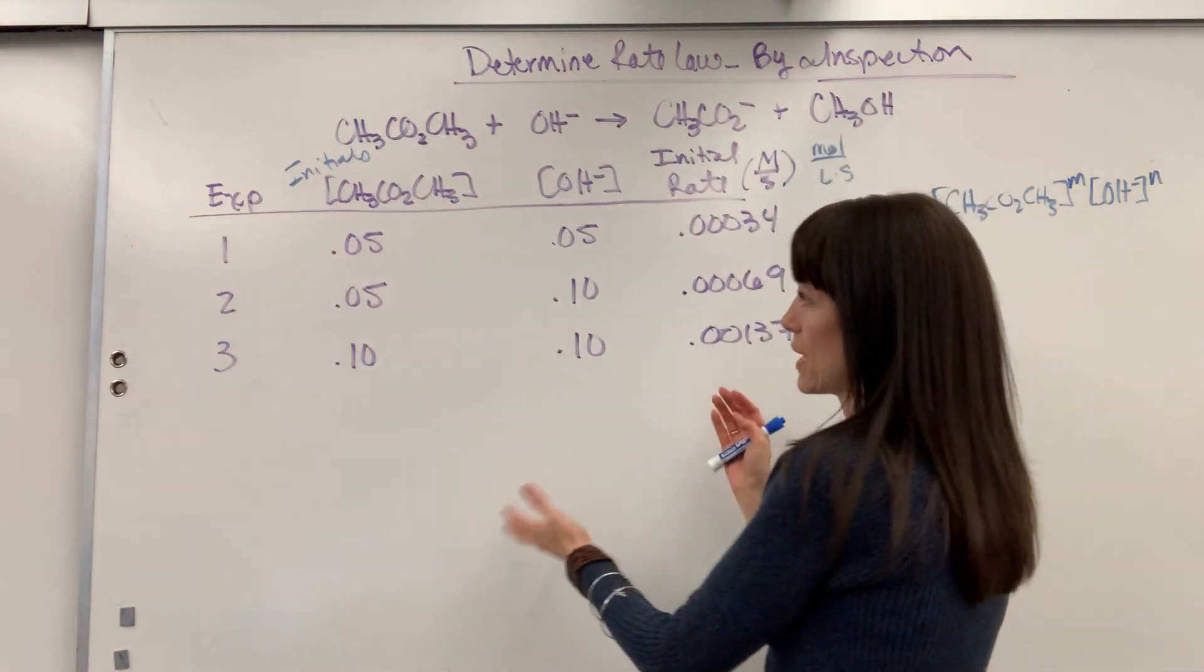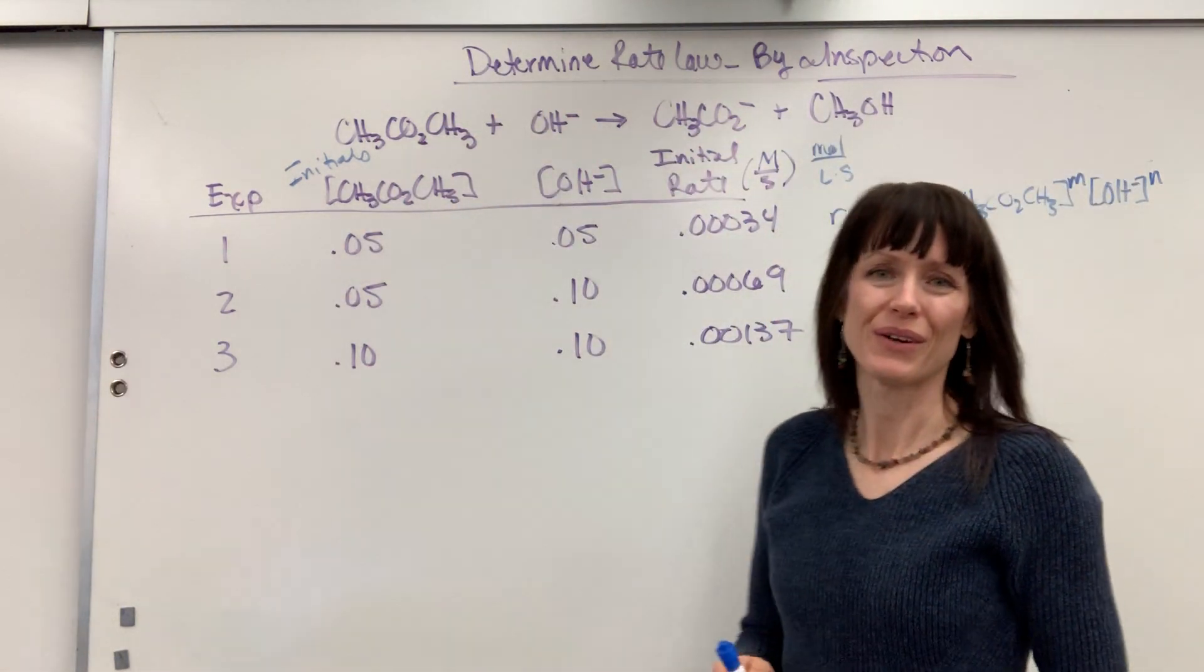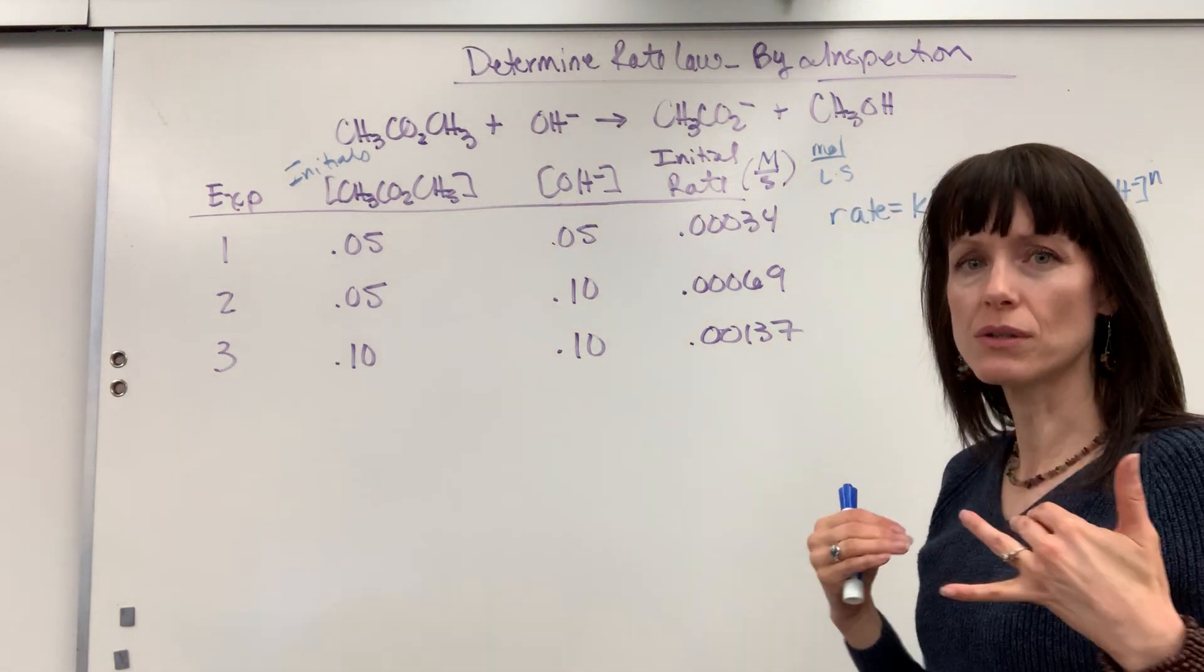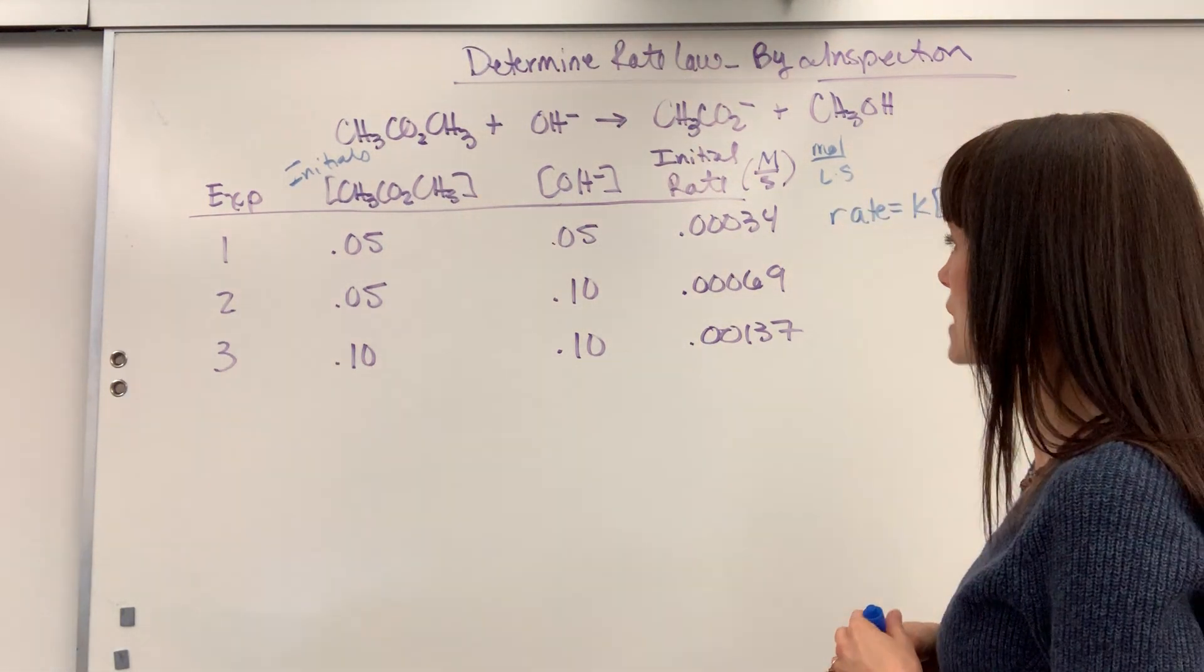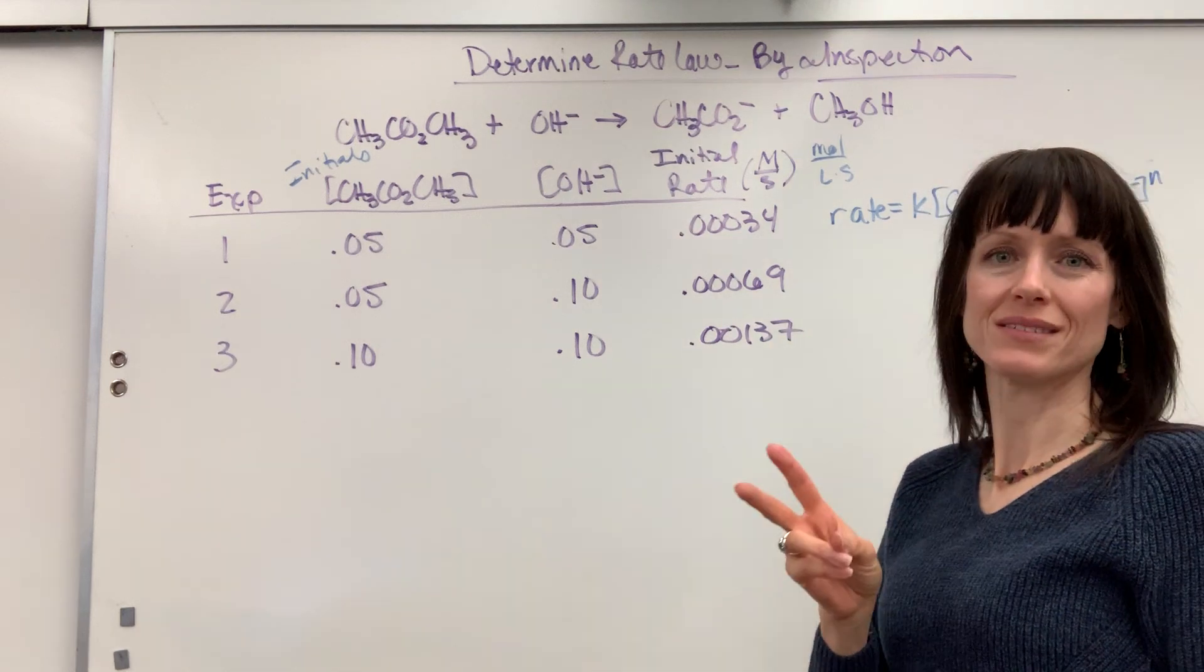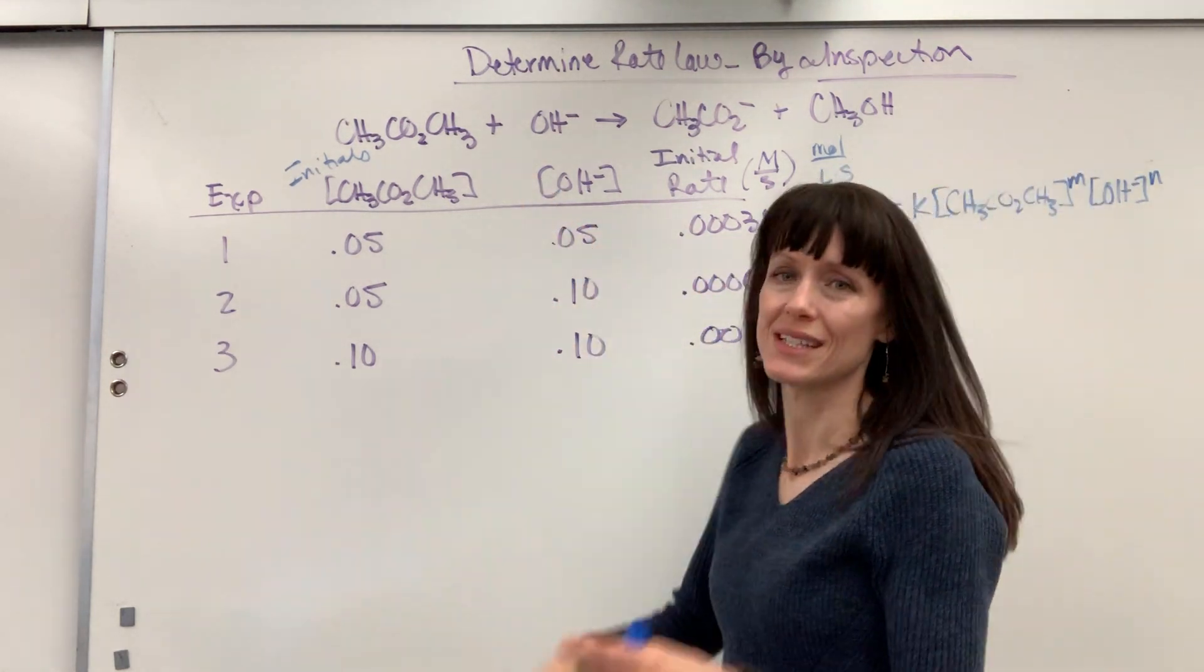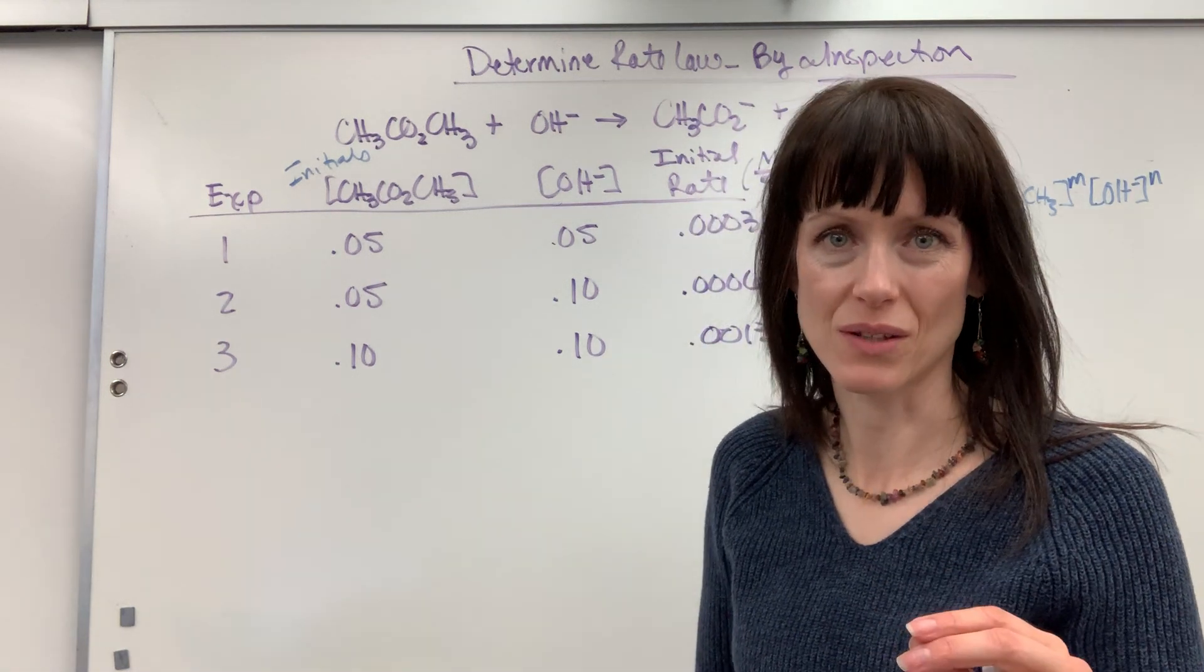Now we are given experimental data. We have to determine those orders experimentally. So what you do, if you want to do mental math to figure this out, you pick two trials in which one of the concentrations is the same number, so it can cancel out.